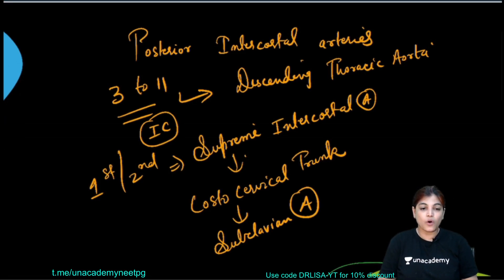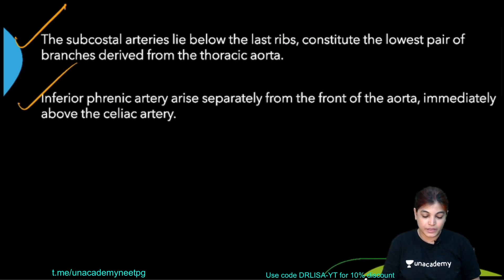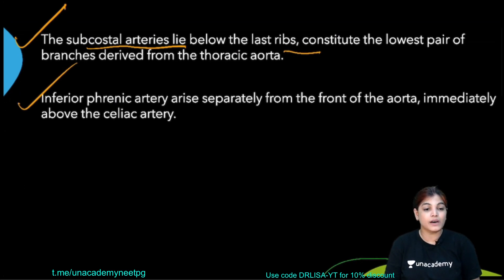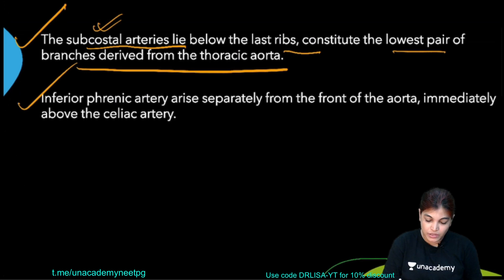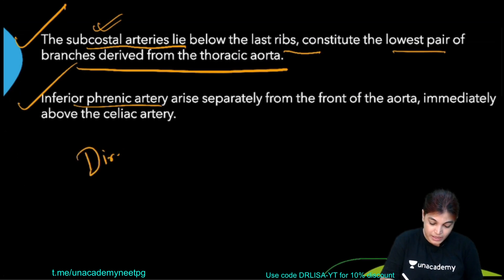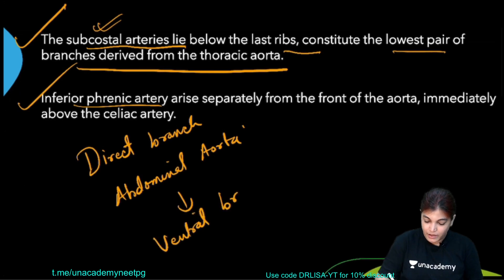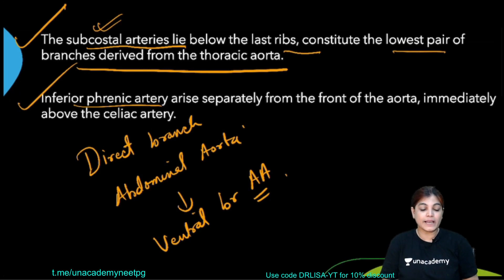Regarding the subcostal artery: it lies below the last rib, so intercostal arteries are named only up to the 11th intercostal space; the vessel in the last space is specifically called the subcostal artery, and it is a branch derived from the thoracic aorta. The inferior phrenic artery is a direct branch of the abdominal aorta — specifically a ventral branch arising just above the celiac trunk, which is also a ventral branch of the abdominal aorta.